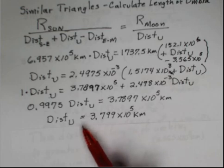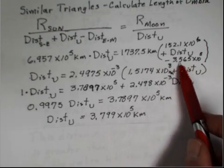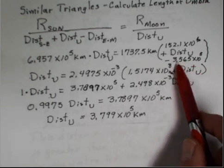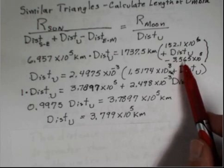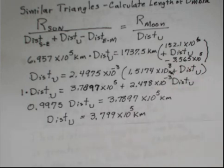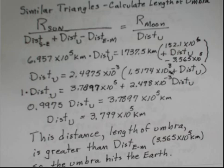Does this umbra reach the Earth, reach the surface of the Earth? Well, if you look back up here, here's our distance. For the case of perigee, the Moon is close to the Earth and, in fact, closer than this distance. So, yes, we do have the umbra hitting the surface of the Earth. And our next challenge will be to find the diameter of the umbra.